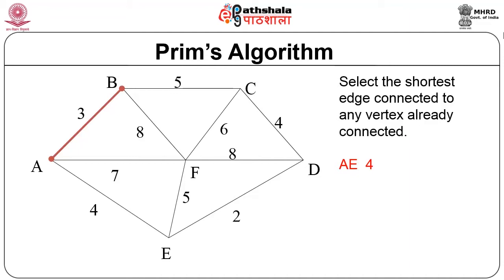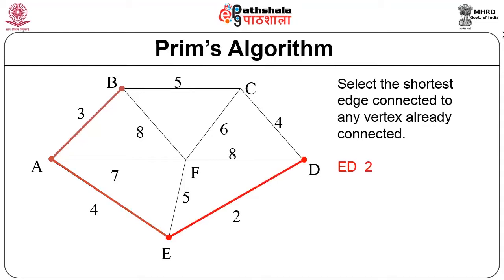Here we have A and B already connected. You have to select the shortest edge connected to any vertex. To B you have 5 and 8; to A you have 4 and 7 — so you select A with weight 4. Now you have B, A, and E. You have to check: to B you have 5 and 8, to A you have 7, and to E you have 5 and 2. So you should select E-D, which is the next selected edge.